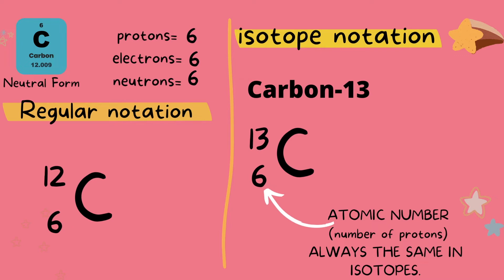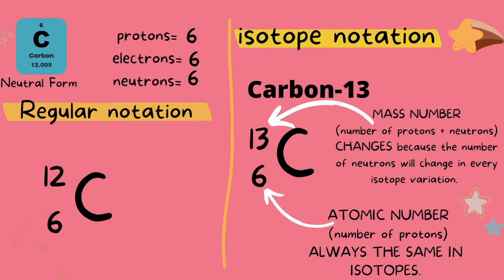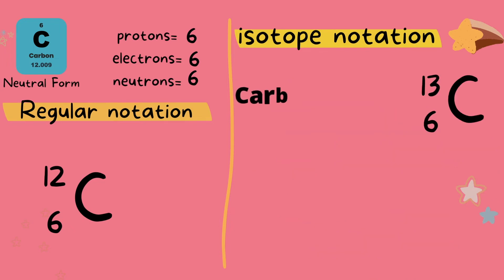It is the element's signature and if carbon did not have six protons it would not be carbon. Notice our mass number changes to 13. What influences the mass number? The number of protons and neutrons, right? So if the number of protons didn't change that means that the number of neutrons in this atom did change. So remember two ways of writing an isotope.